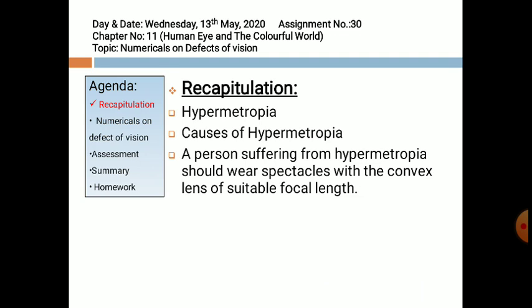Hypermetropia is the defect of human eye in which a person cannot see nearby objects clearly but can see distant objects clearly and distinctly. It is also known as farsightedness. In hypermetropia, if an object is placed near the eyeball, the image will be formed behind the retina, as you can see in the figure.